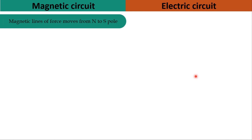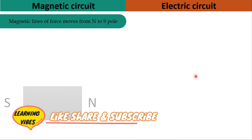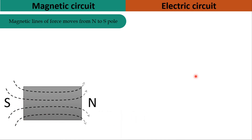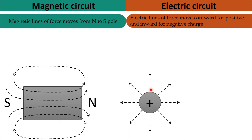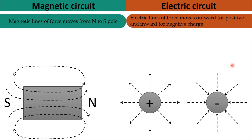Magnetic lines of force move from N to S pole outside the magnetic material, and from S to N within the magnetic material, as seen in the animation. Similarly, in an electrical field, electrical lines of force move outward from a positive charge and inward toward a negative charge.